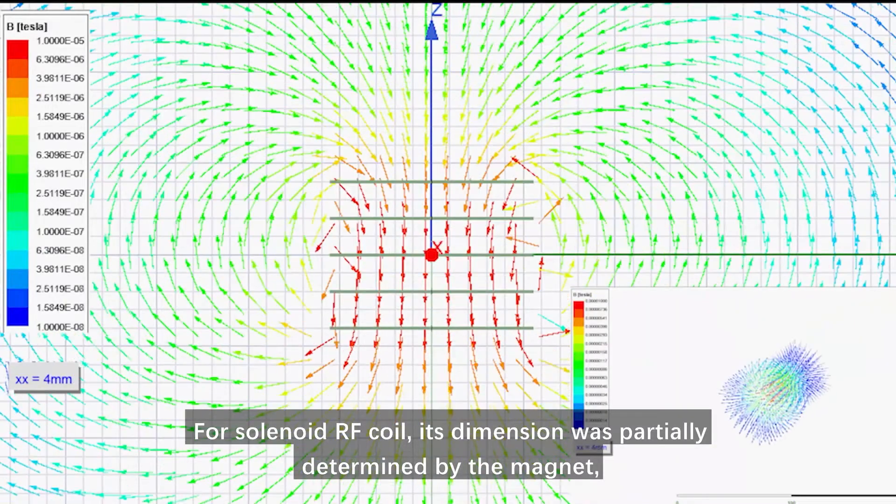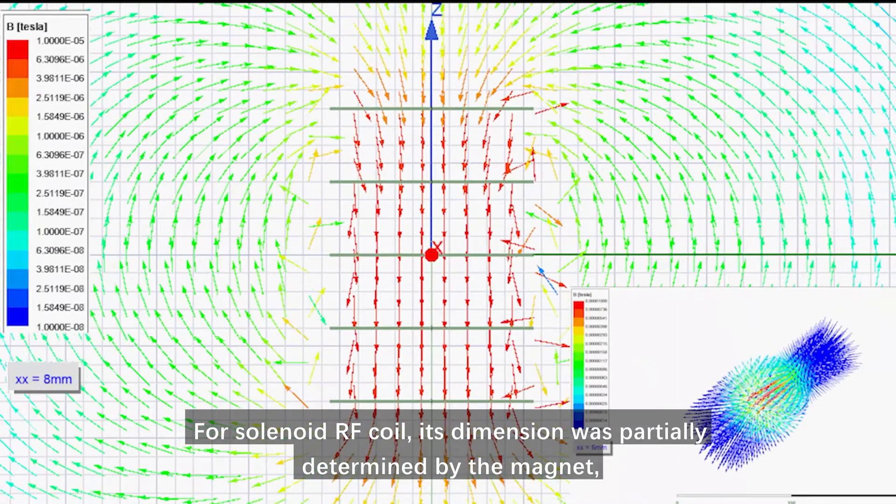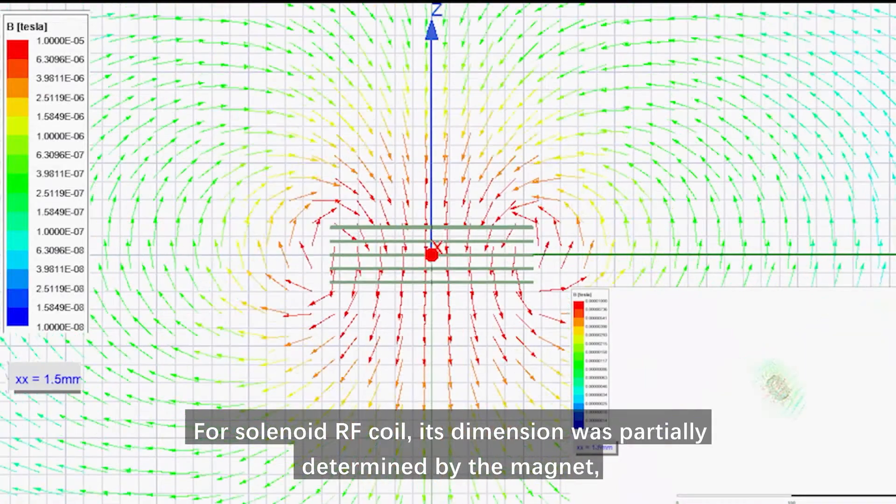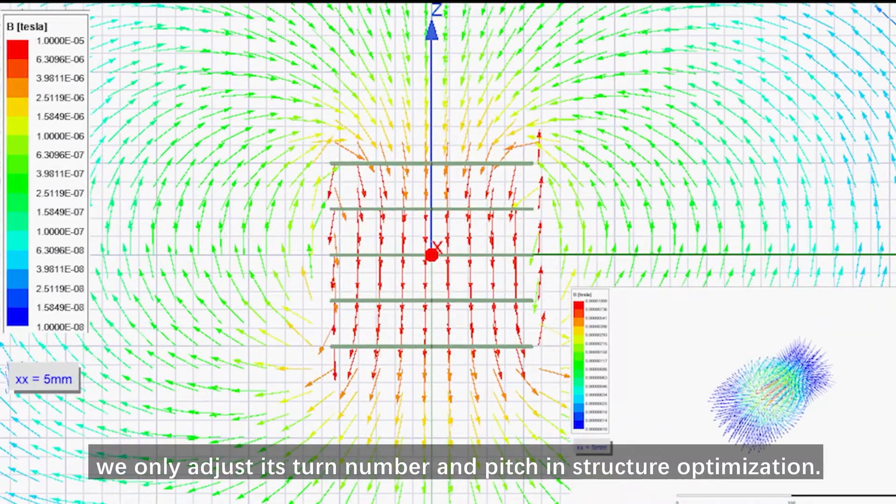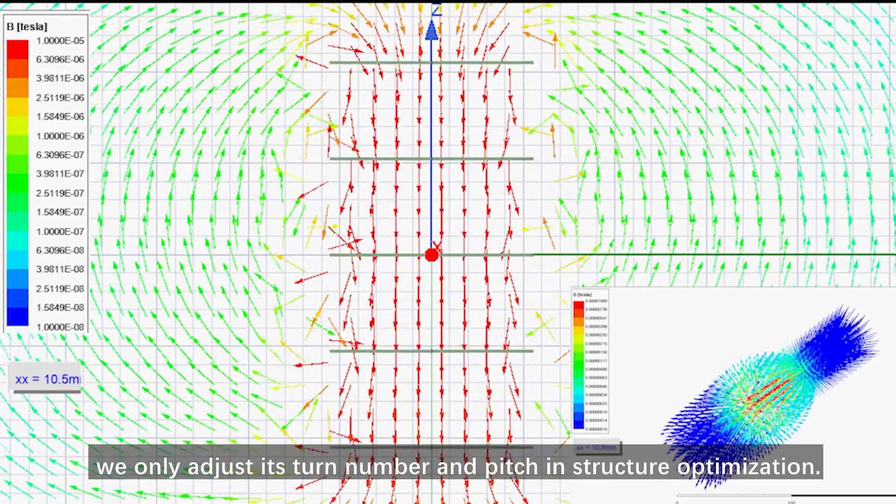For solenoid RF coil, its dimension was partially determined by the magnet. We only adjust its turn number and pitch in structure optimization.